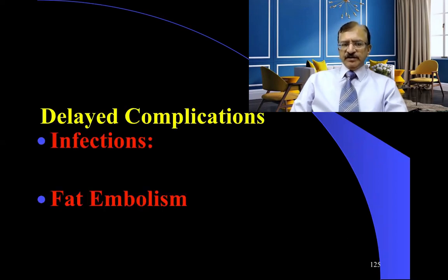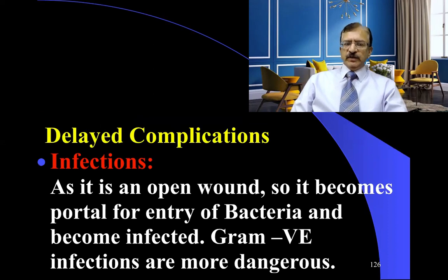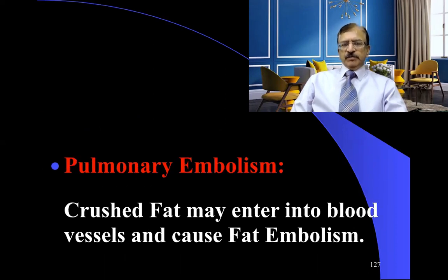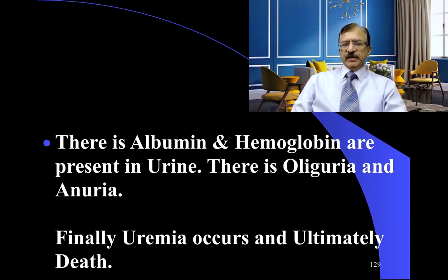Delayed complications are infections, fat embolism, and crush syndrome. As it is an open wound, it becomes a portal of entry for bacteria and becomes infected. Gram-negative infections are more dangerous. When fat is crushed, it may enter into the blood vessels and cause fat embolism. In crush syndrome, crushing of the subcutaneous tissues and muscles leads to release of acid metabolites, leading to crush syndrome and acute renal necrosis or renal failure. There is albuminuria and hemoglobin in the urine, oliguria, and ultimately anuria. Finally, uremia occurs, and death is the ultimate fate.